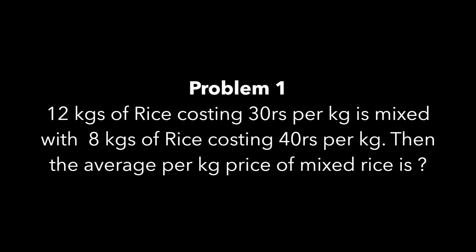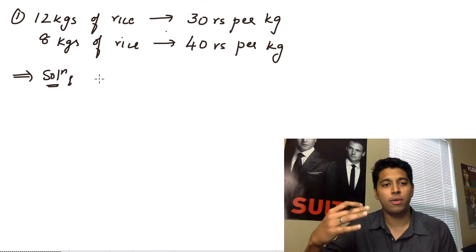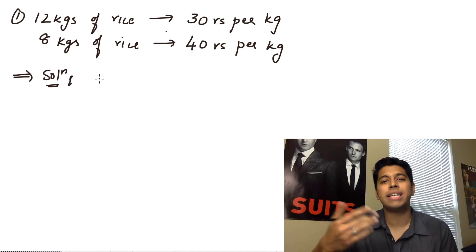Here's your first sum. Now for the first problem, they've said that it's 12 kgs of rice which is priced at 30 rupees per kg, and you have 8 kgs of rice that's priced at 40 rupees per kg. Here you're asked to find out that if they're both mixed together, what is the cost per kg? What is the average cost?